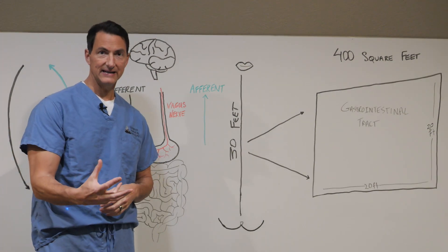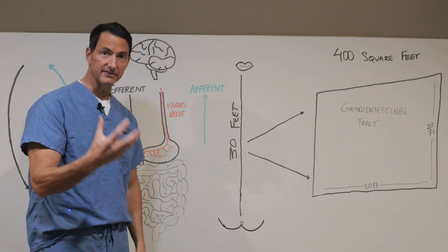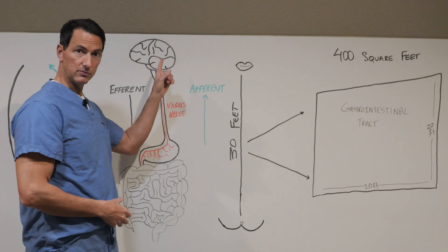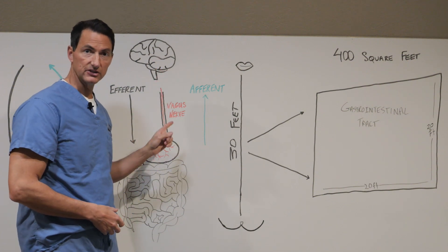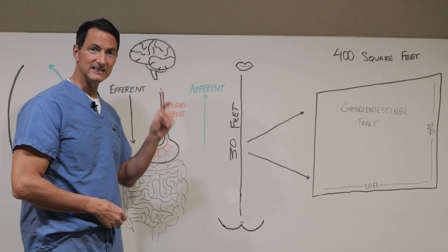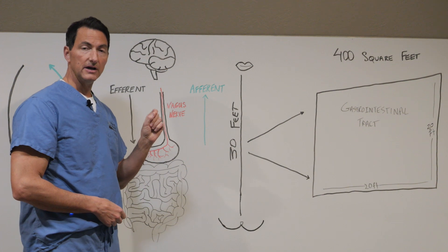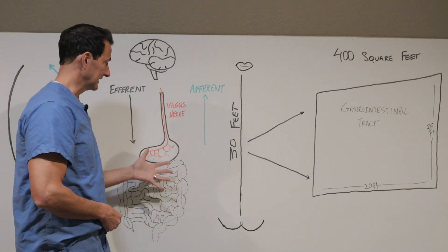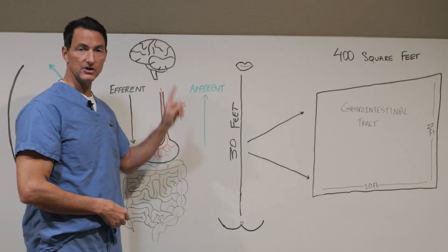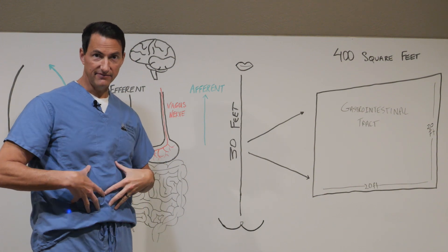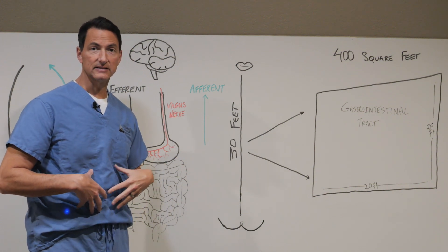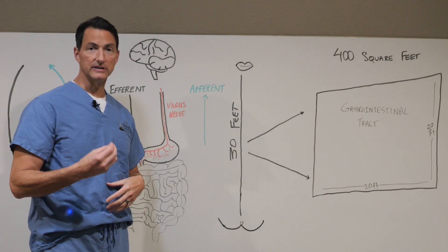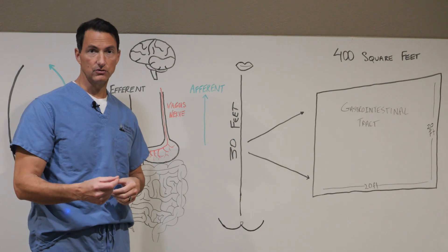To review, visceral fat is unhealthy because that visceral fat communicates with the brain primarily through the vagus nerve. And modern metabolic disease is driven by dysfunction of those afferent signals between the gut and the brain through the vagus nerve. As that develops, the fat cells, the adipocytes around the viscera, become more dysfunctional and uncontrolled.